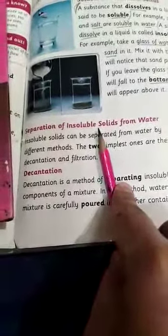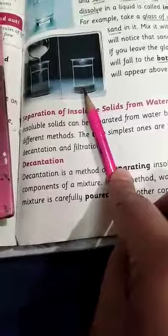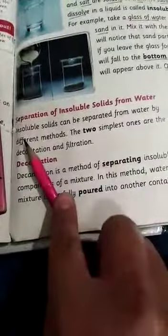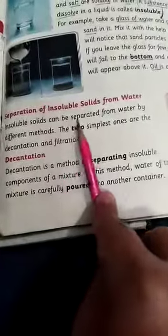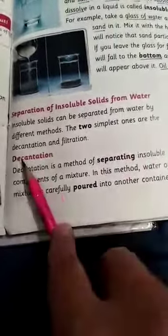The insoluble solids can be separated from water by different methods. The two simplest ones are decantation and filtration.